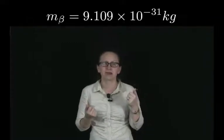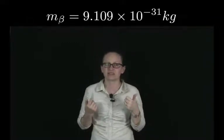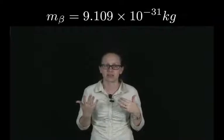Beta particles, on the other hand, are electrons. So these are much lighter than protons and neutrons. A beta particle has a mass of 9.109 times 10 to the minus 31 kilograms. And gamma radiation is photons or electromagnetic radiation. So it's actually massless.